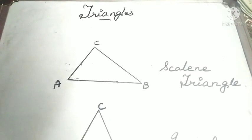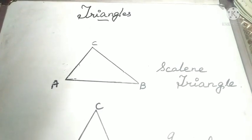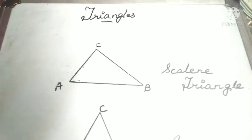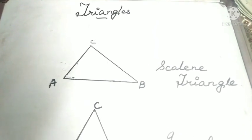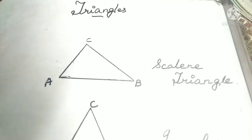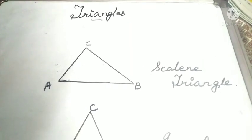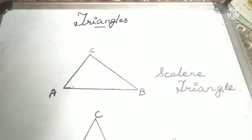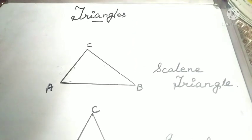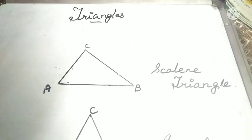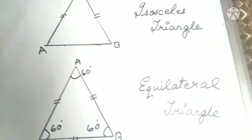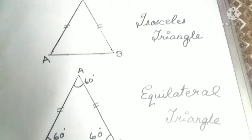Now we're going to learn the classification of triangles based on the length of the sides. There are three types: scalene triangle, isosceles triangle, and equilateral triangle.